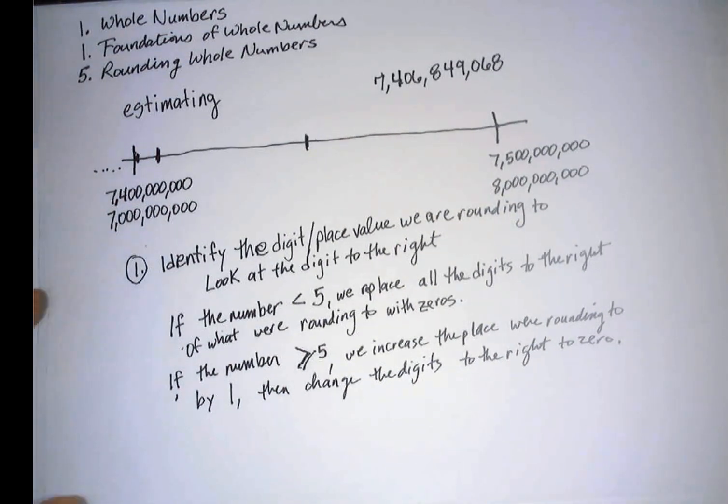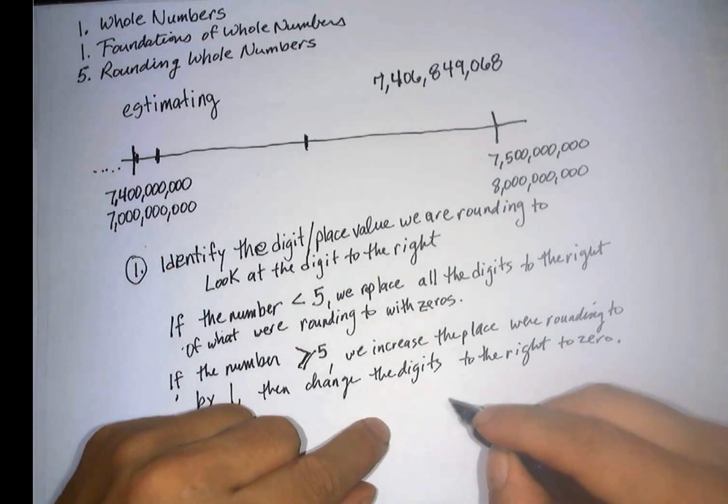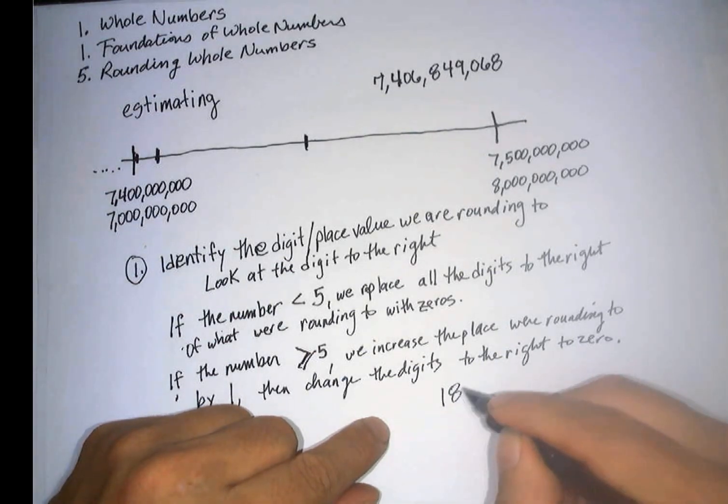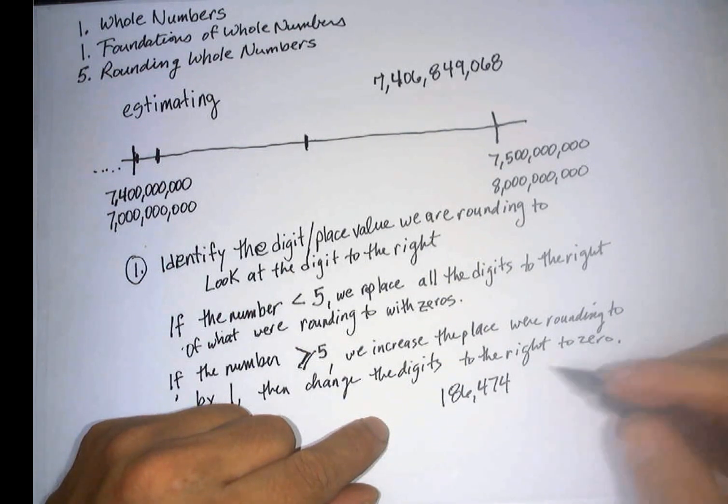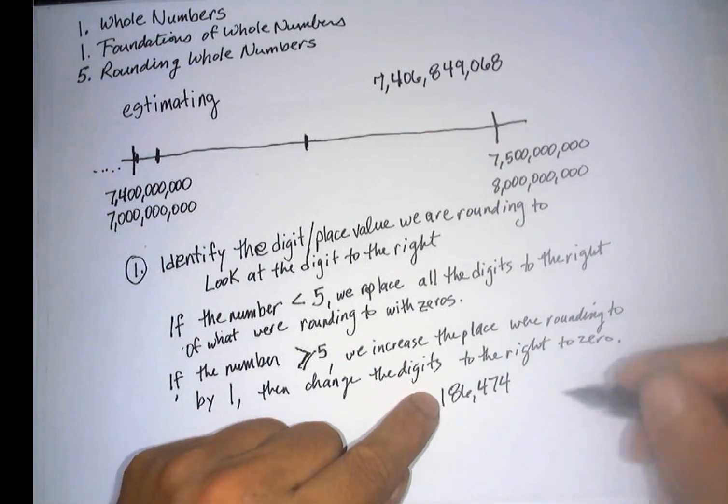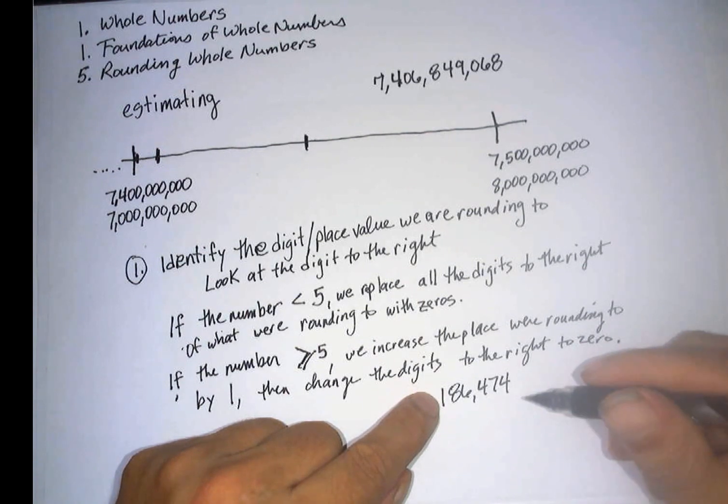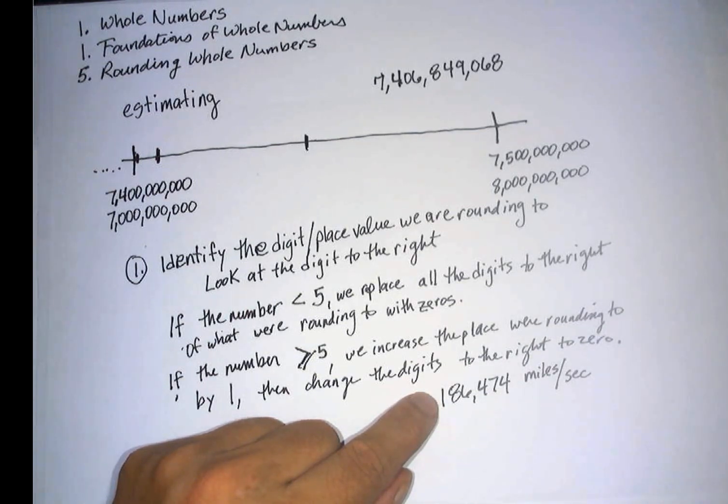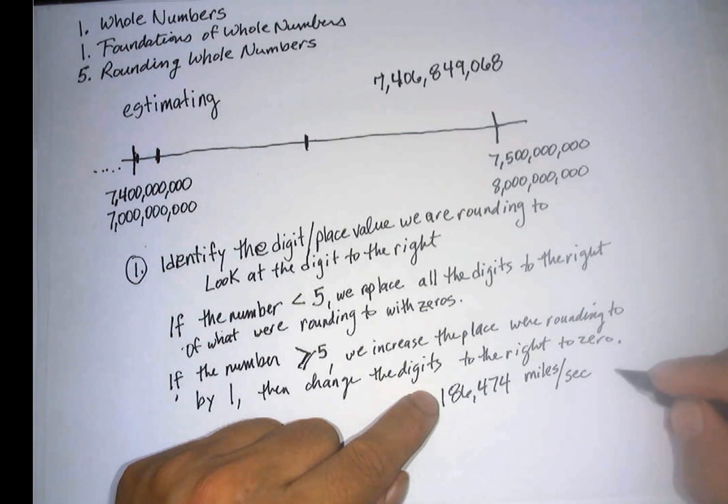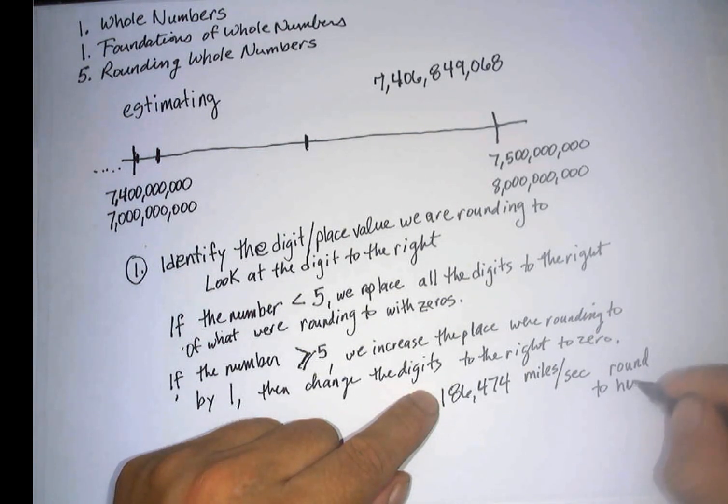For example, the speed of light is 186,474, close, somewhere around there, 186,000 miles per second. Actually, so let's round this to the nearest 100,000.